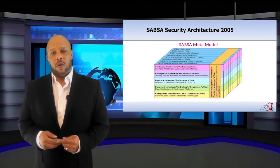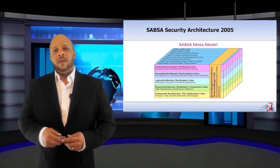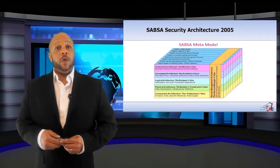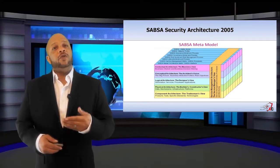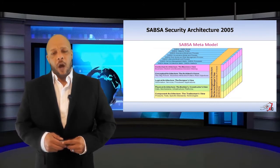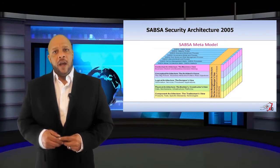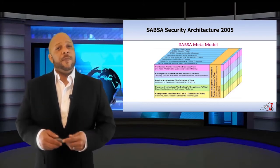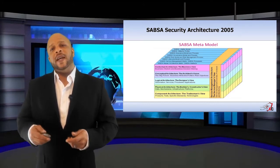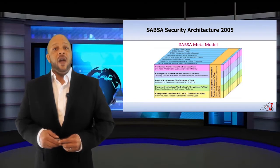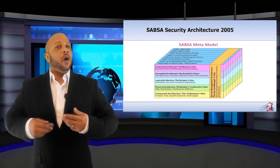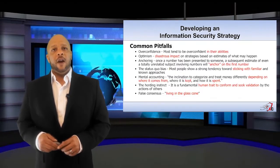A classic security architecture model is the SABSA model. Within the SABSA model, you have many different architectures all layered on top of each other, but we keep in mind all the interaction between each layer to create a holistic environment.